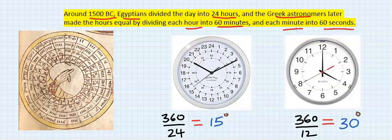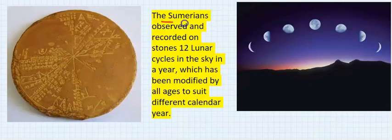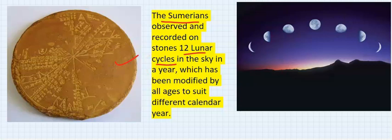The Sumerians observed and recorded on stone 12 lunar circles in the sky in a year, which has been modified by all ages to suit different year calendars.